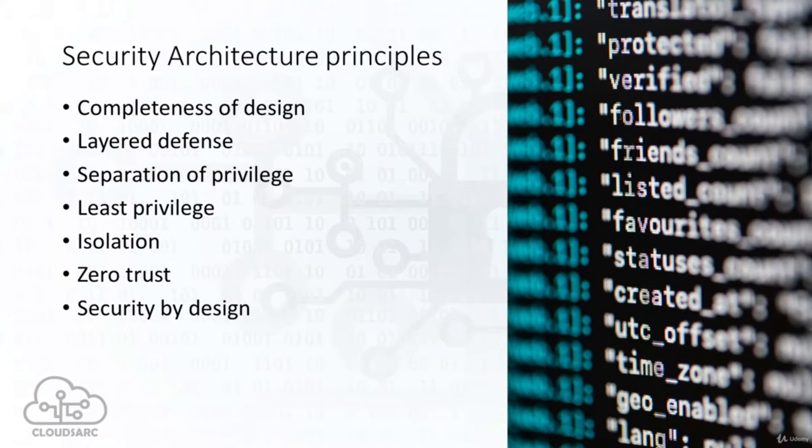Zero trust is based on the realization that traditional security models operate on the assumption that everything inside an organization's network should be trusted. Under this broken trust model, it is assumed that the user's identity is not compromised and that all users act responsibly and can be trusted. Zero trust can be achieved by leveraging network segmentation for preventing lateral movement, providing application threat prevention, and applying granular user access control.